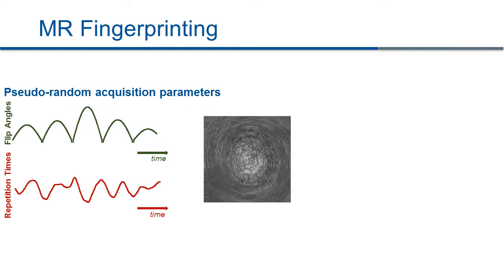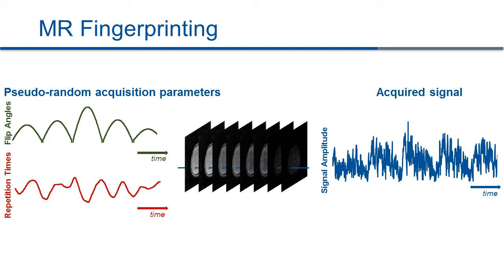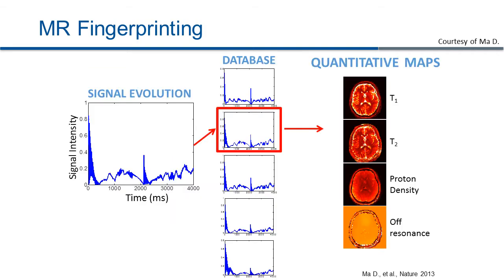Let me start with some background introduction of MR Fingerprinting. Instead of using a set of fixed parameters in conventional acquisitions, MRF acquires a series of highly undersampled images with pseudo-random acquisition parameters, so the acquired signal is always in transient state. MRF pursues unique signal evolutions for different tissue types.